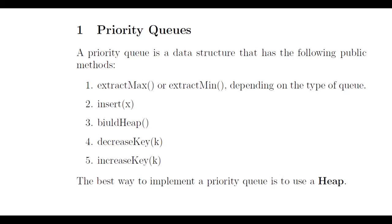The priority queue has several basic methods. We can use extract max or extract min, depending on whether we have a max queue or a min queue. We have an insert where we insert an element — remember, that element can be anything but it must contain a key. The element also has to be comparable, meaning it has to implement a compareTo function, which is used to determine which element is larger in order to extract the maximum or minimum.